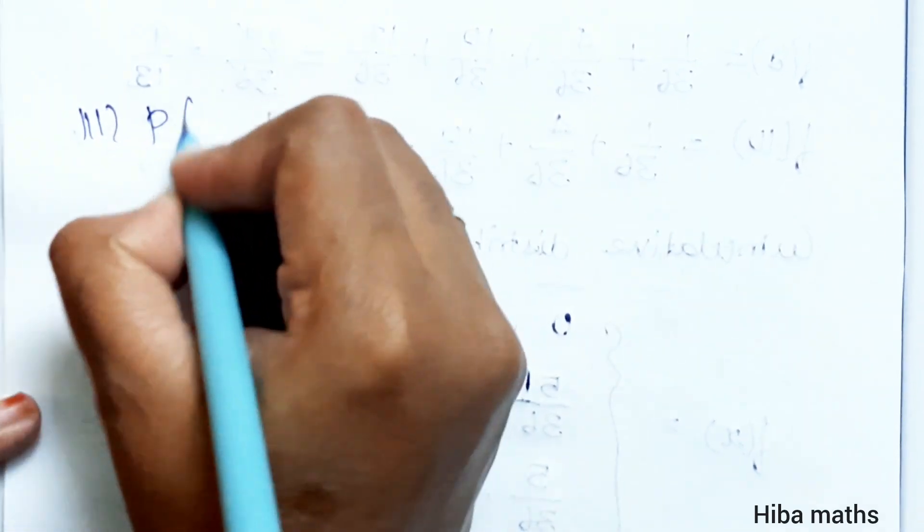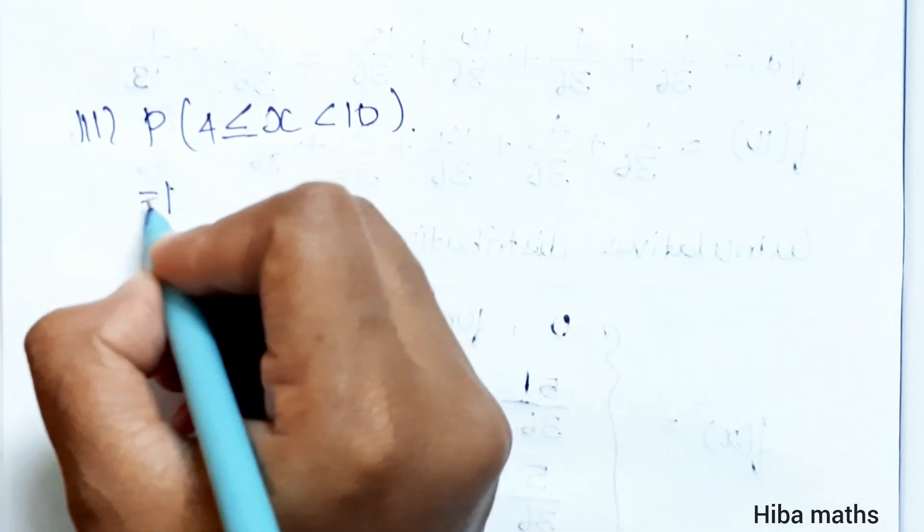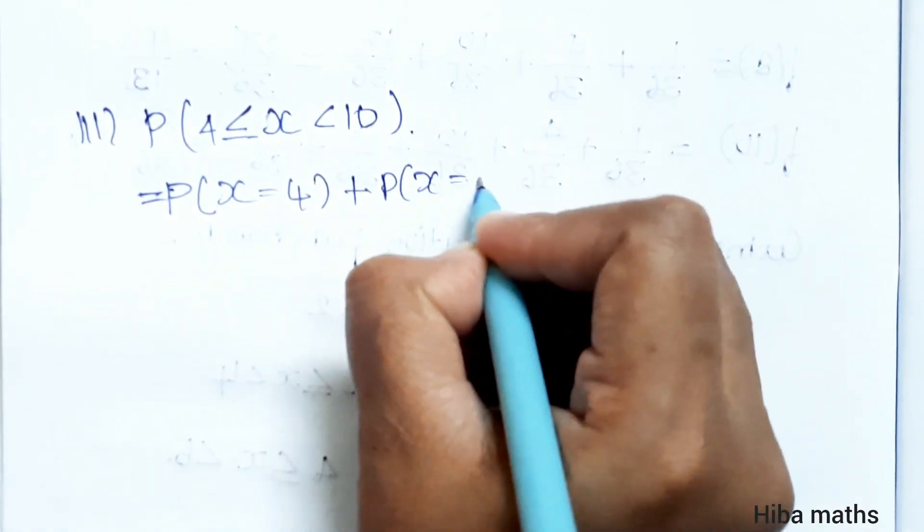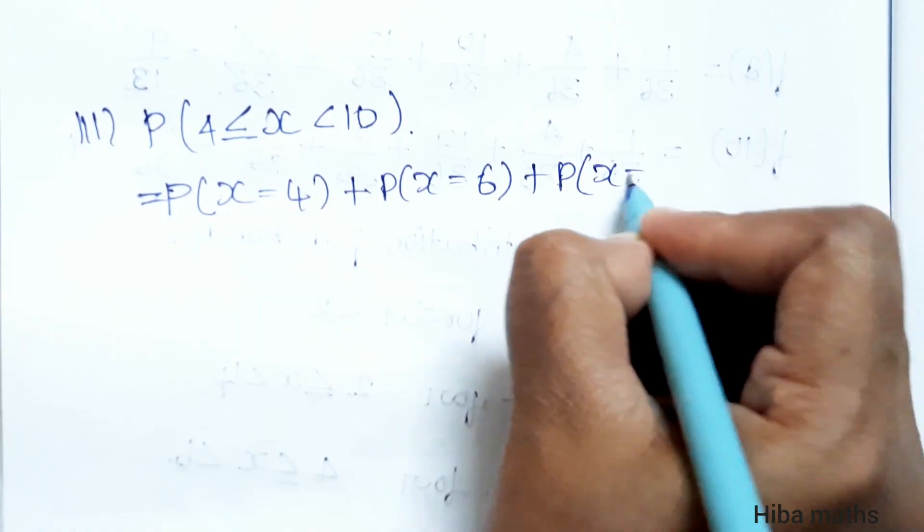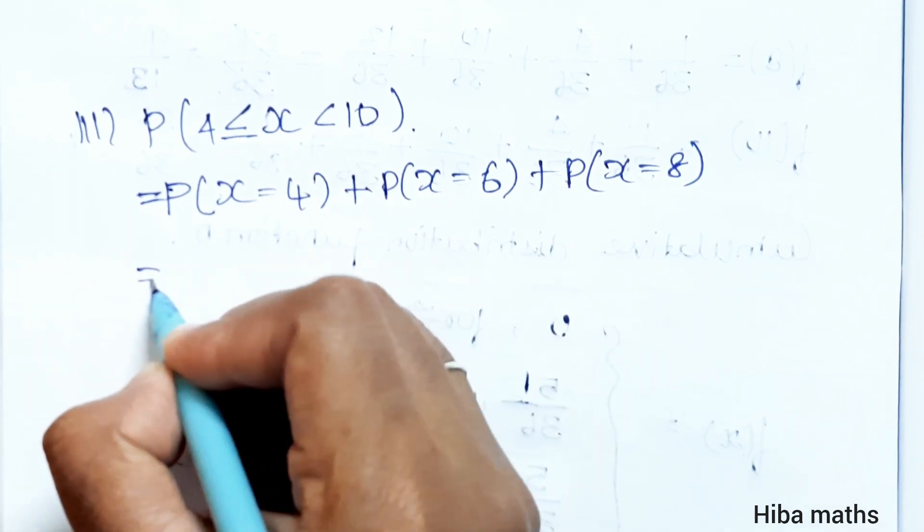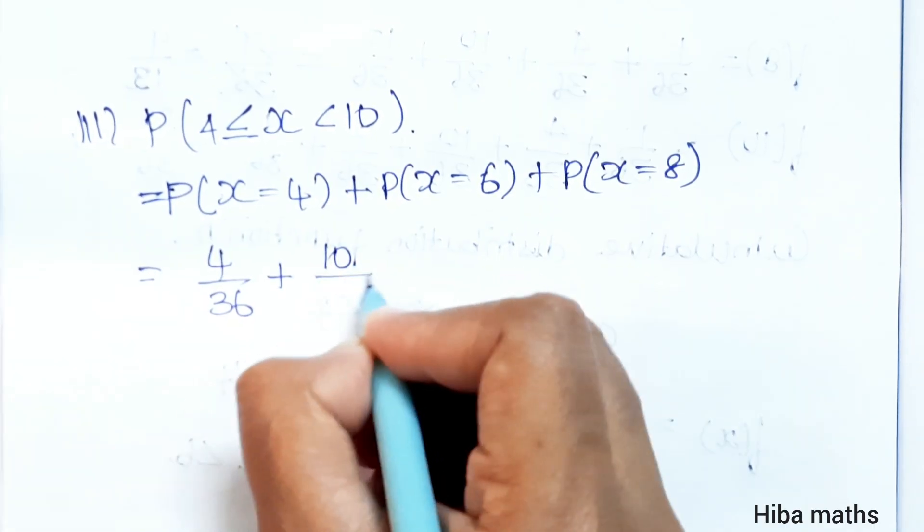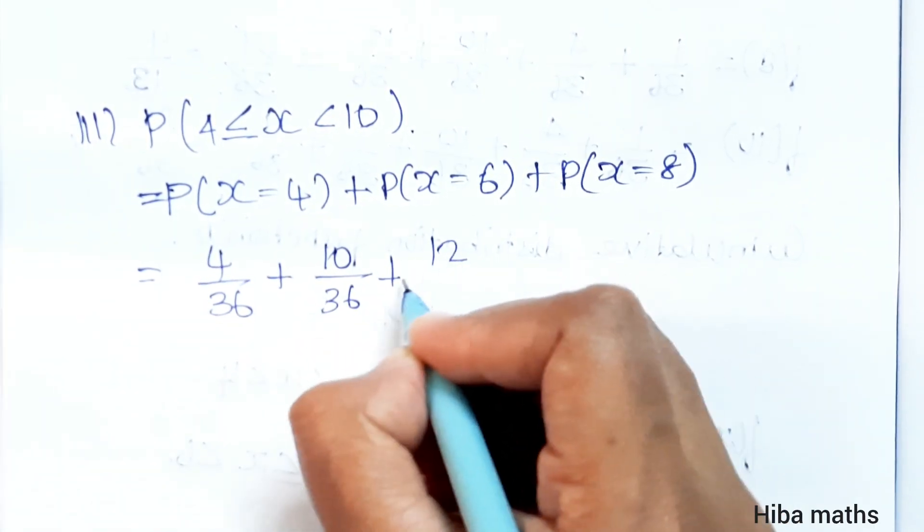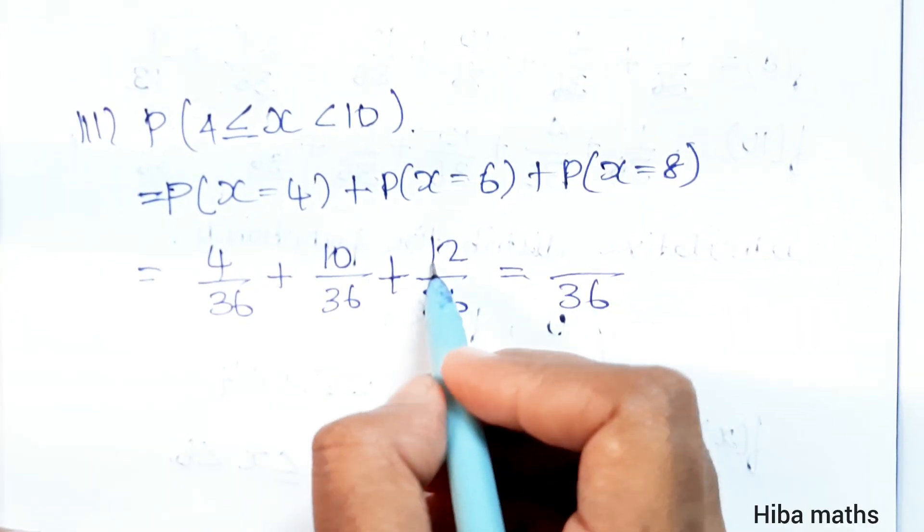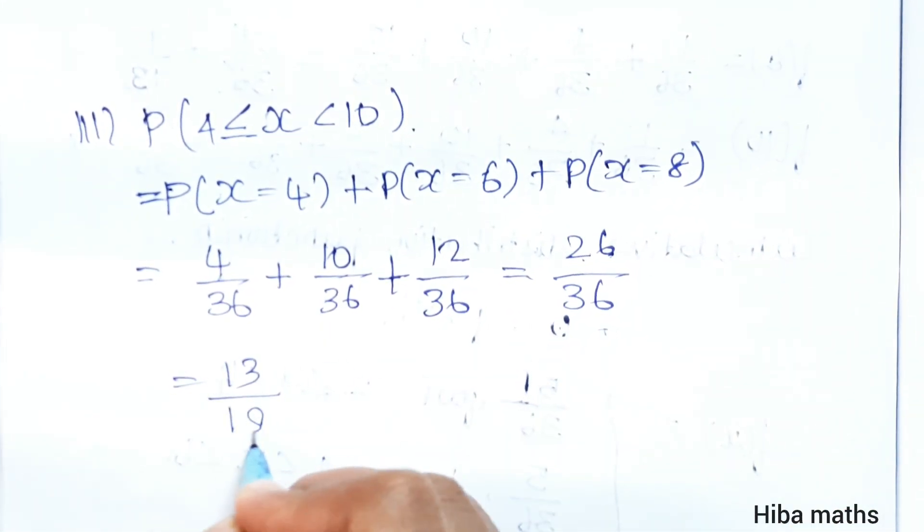Third subdivision: P of X is greater than or equal to 4 and less than 10. We need to add P of X equals 4 plus P of X equals 6 plus P of X equals 8. X equals 4 is 4 by 36, 6 equals 10 by 36, 8 equals 12 by 36. Adding these: 4 plus 10 plus 12 equals 26 by 36, which simplifies to 13 by 18.